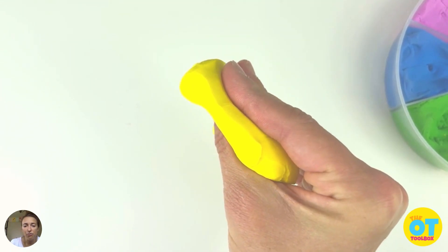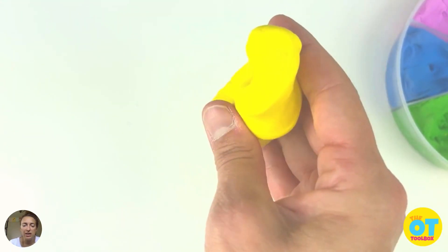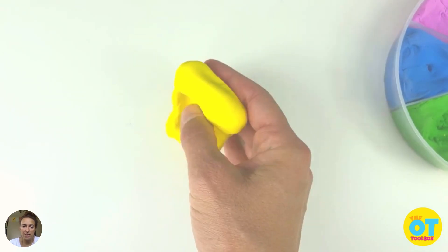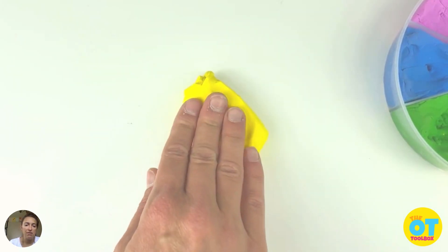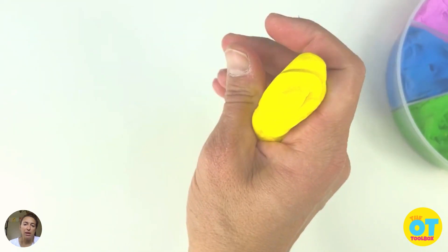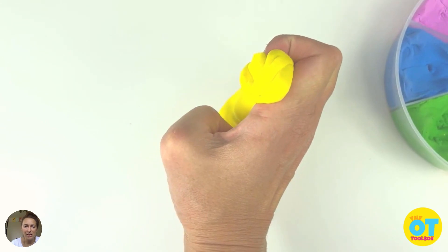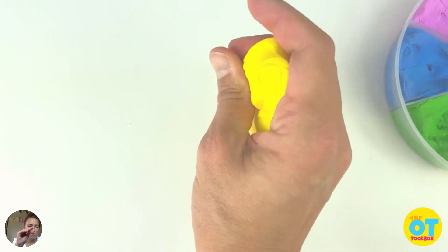The next is a form of a tendon glide exercise where you're keeping your fingers straight except for the big joint at the hand and the thumb and press it kind of like a little puppet.